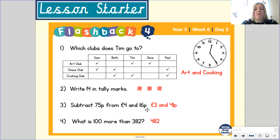For question number 3, if you subtract 75p from £4.16, the total amount of money left will be £3.41. Did the strategy that you used help you to find the answer? If you found that tricky, write me a little note on your work so that I can see it on Tapestry and we can go back and recap that in one of our live sessions.